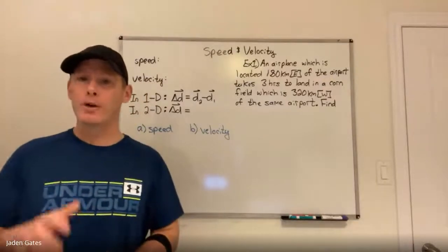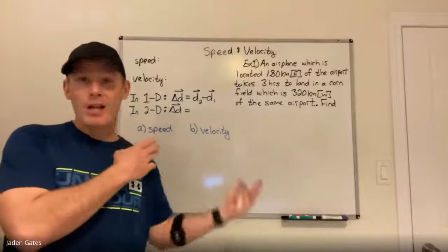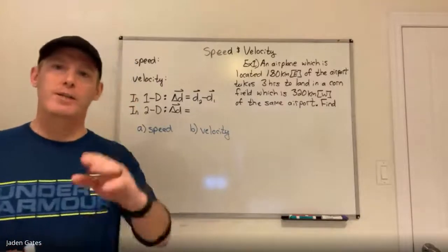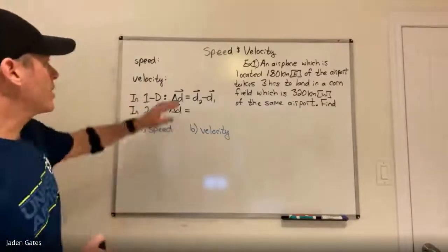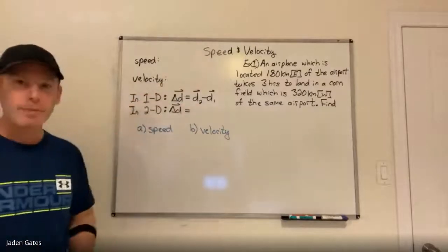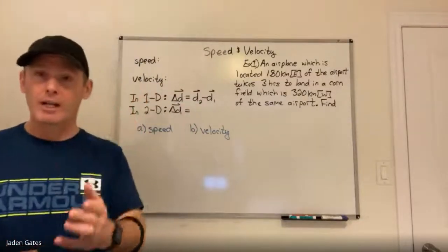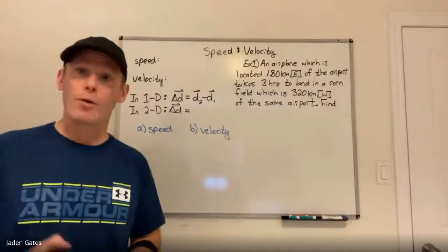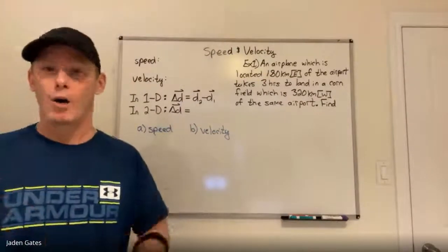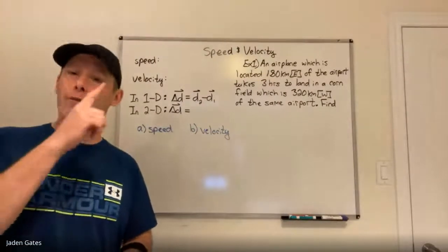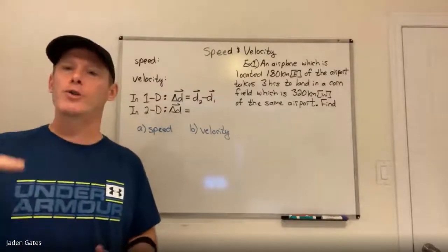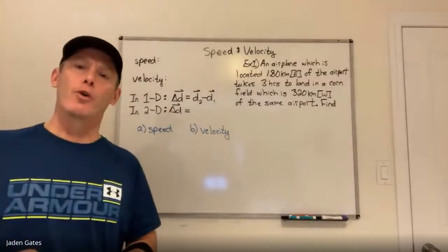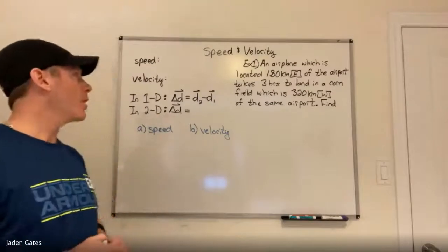If that confused you a little bit or you had some issues, this is kind of a second shot at it. What we're going to look at today is speed and velocity — something you did in grade 11, just like distance and displacement. The difference in this unit, as opposed to grade 11, is that in grade 11 you always did it in one dimension. In grade 12, we do it in one dimension and two dimensions. That's the key difference.